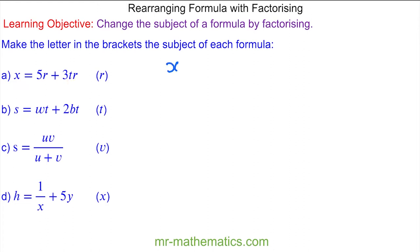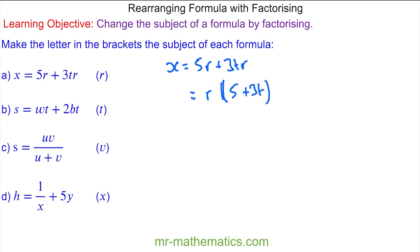We have x is equal to 5r plus 3tr, and on the right hand side we've got two r terms. To make this one r term we need to factorise, which means we can have r on the outside of our bracket with 5 plus 3t on the inside.